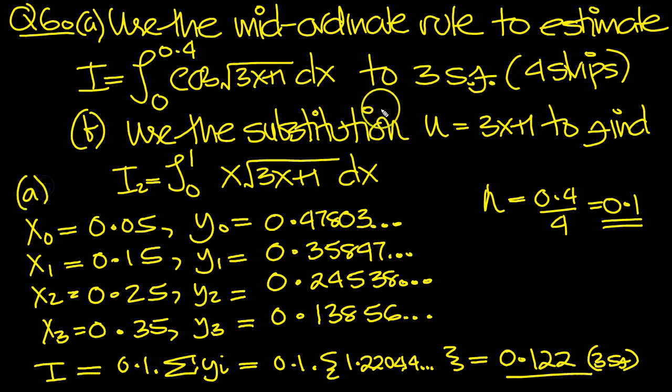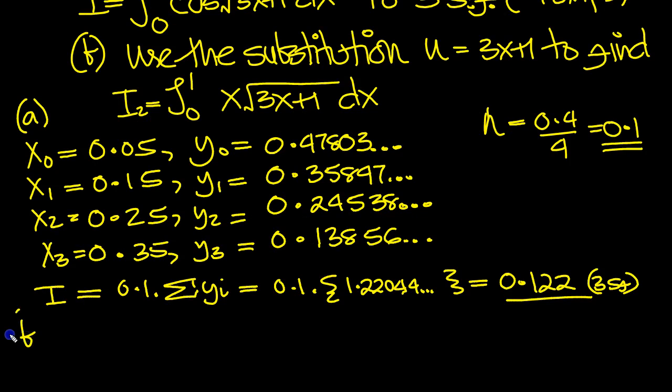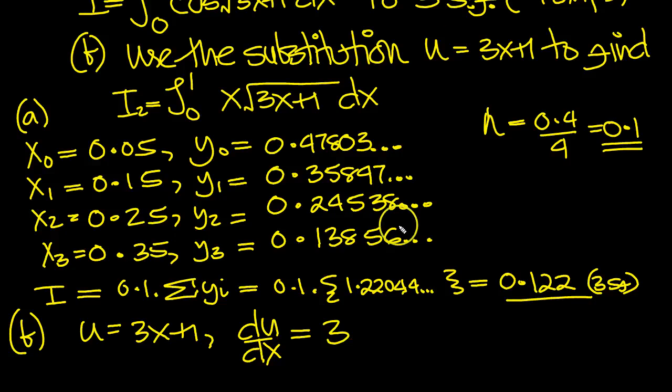Now part b. This integral then, u equals 3x plus 1. I've labelled it i2. So u equals 3x plus 1. So du dx then is equal to 3. When x is 0, u is equal to 3 times 0 plus 1 is 1. And when x equals 1, u is equal to 3 plus 1 is 4.